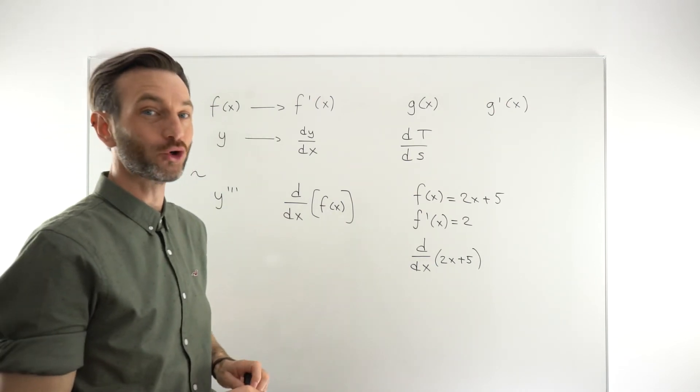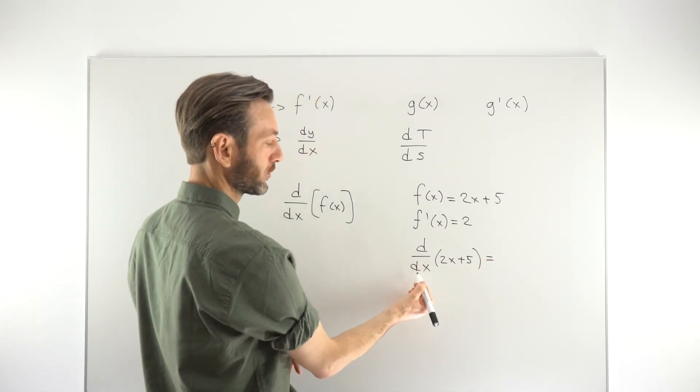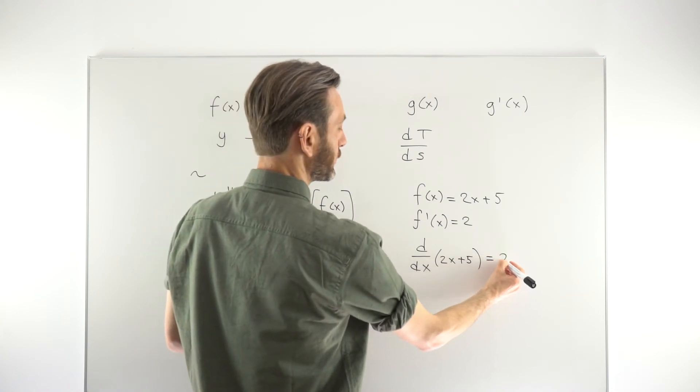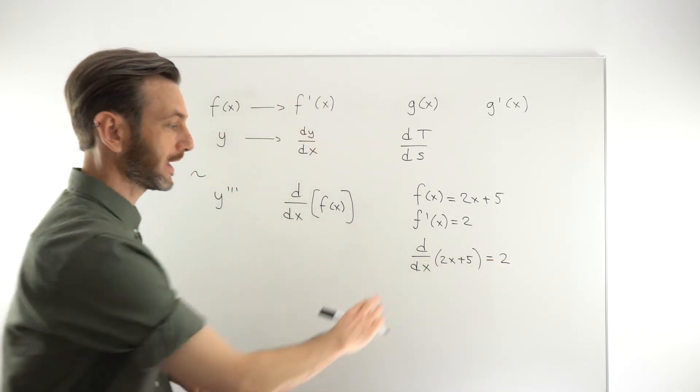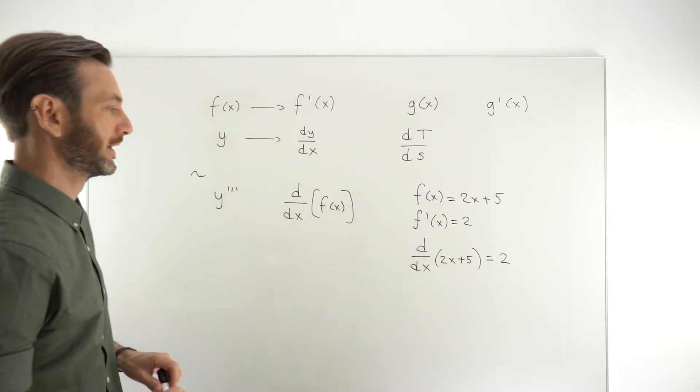Initially, this notation might not be all that prevalent in your work if you're just starting calculus and differentiation, but you will see it before too long. So it's good to know about it now. And then you would just say, right, well, I'm taking the derivative with respect to x of this and the derivative would still be 2, but you've kind of captured a slightly different way of thinking about it in that sense.